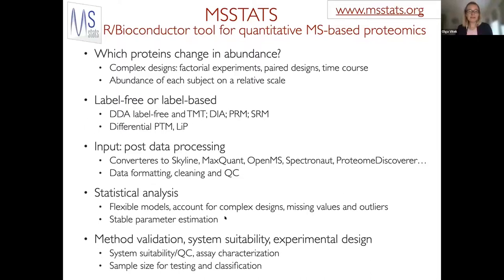We need to automatically recognize the structure of the experiment and fit the right models. These models are fit over and over for each protein, one protein at a time, so they also have to be numerically stable. Beyond that, we have additional efforts such as method validation, system suitability, quality control, assay characterization in terms of figures of merit such as limit of detection and limit of quantification. And the question we are asked most as statisticians is: how many replicates do we need for future experiments?